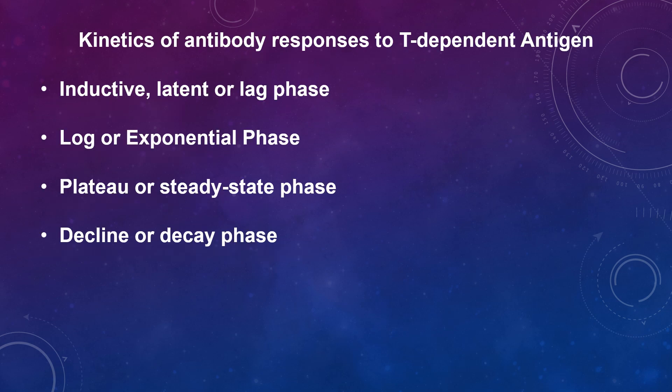Looking at the primary antibody response and its kinetics: first is the inductive lag or LAD phase, in which the antigen is recognized as foreign and cells begin to proliferate and differentiate in response to the antigen. The duration of this phase varies depending on the antigen but is usually five to seven days. There is then a log or exponential phase, in which antibody concentration increases exponentially as the B cells stimulated by the antigen differentiate into plasma cells which secrete antibody.